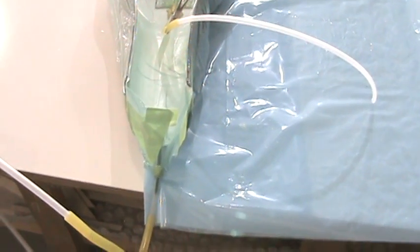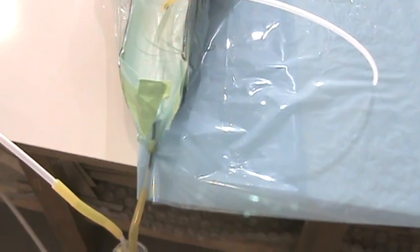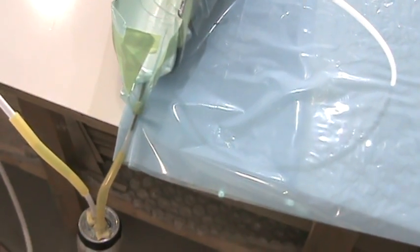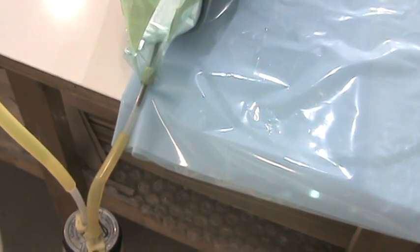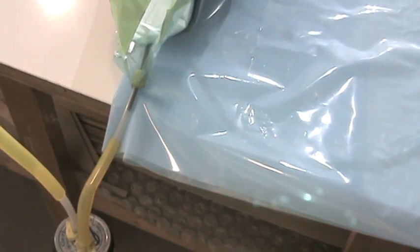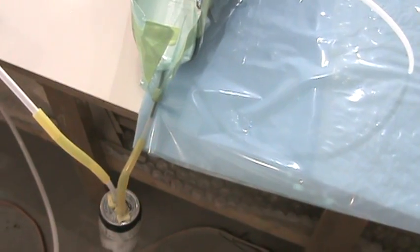Down here we have the suction coming into the mold, and as you can see the spiral wrap is wrapped around itself and then inserted into the vacuum tube. That gives us continuous vacuum throughout the mold.